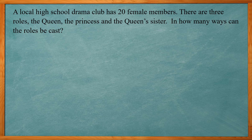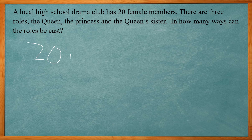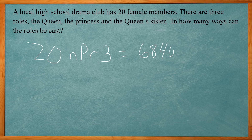A local high school drama club has 20 female members. There are three distinct roles: the queen, the princess, and the queen's sister. How many ways can the roles be cast? Since there are distinct roles, order matters — so this is a permutation, not a combination. We have 20 to choose from and three places to fill: 20 nPr 3. Entering that in the calculator gives 6,840.